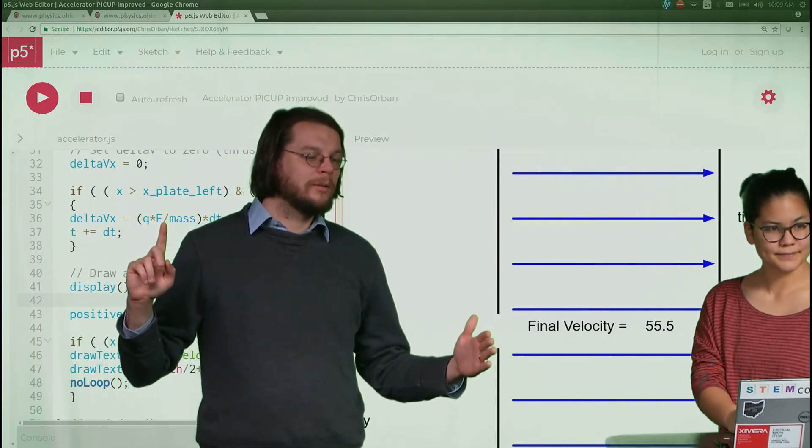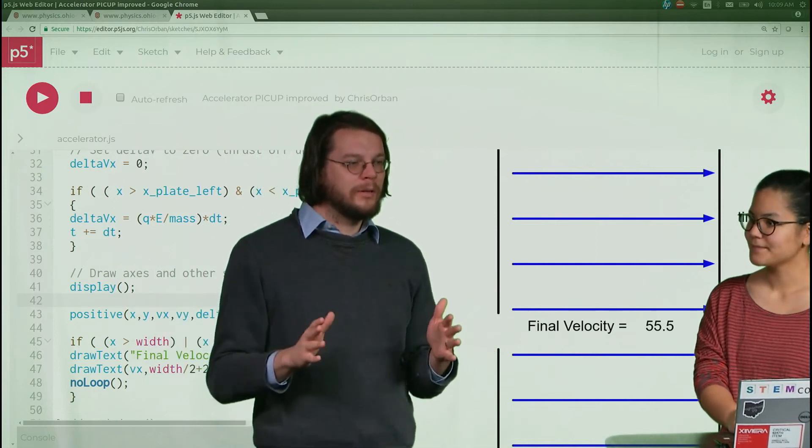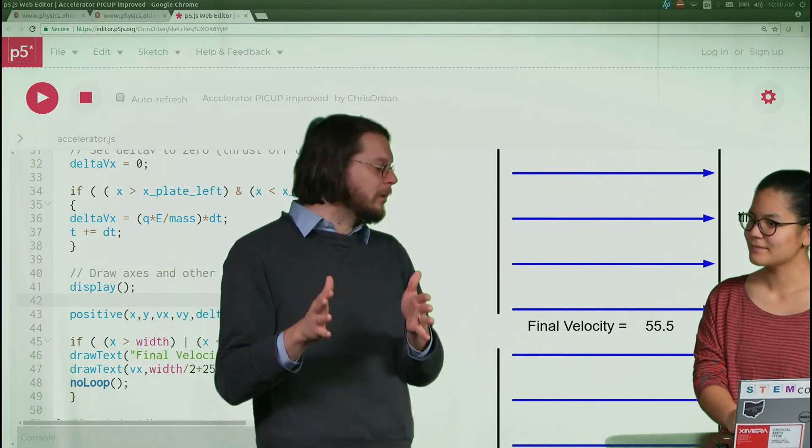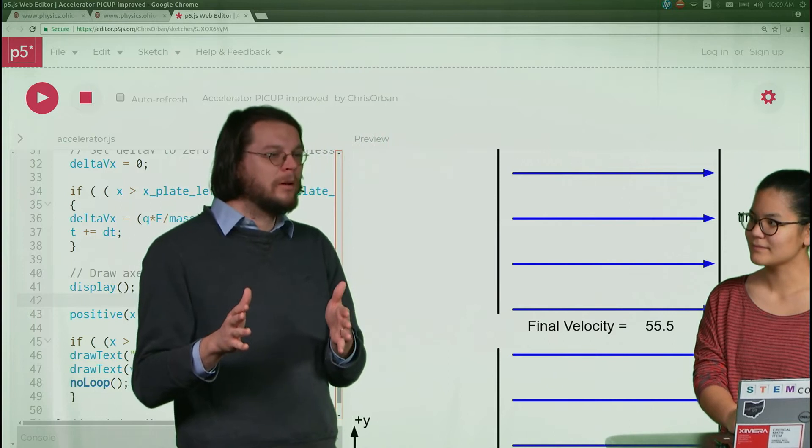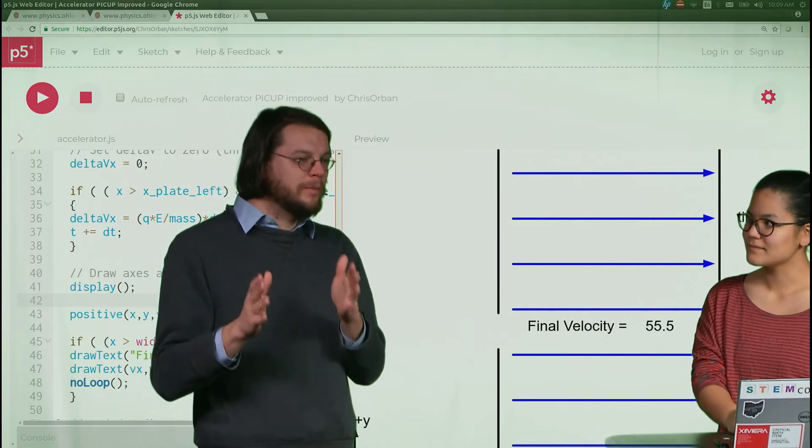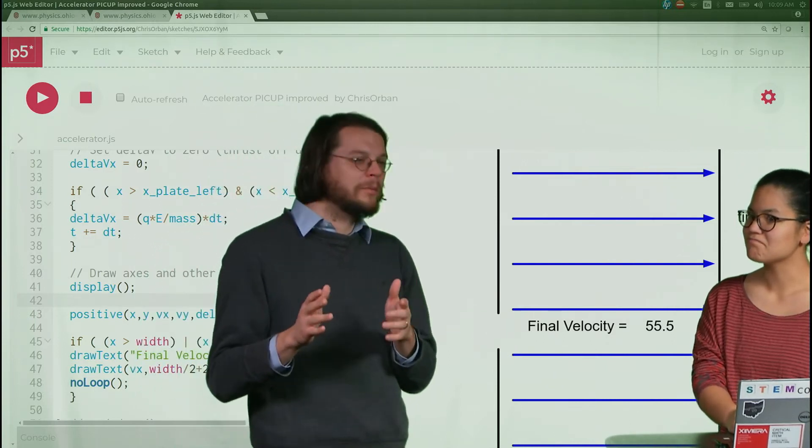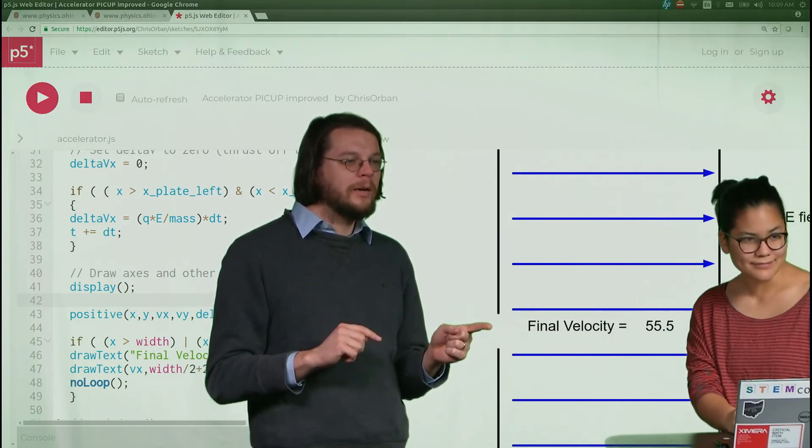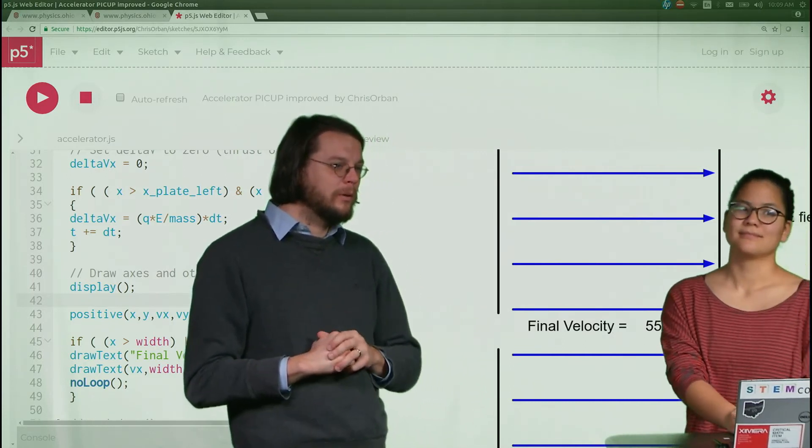This statement is only true when the particle sort of reaches this inlet. By the way, in real life what this is is you have two big pieces of metal that are charged up. If they're charged up, then there's an electric field between the two of them, and we made this tiny little hole for the particle to go through.